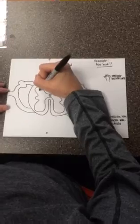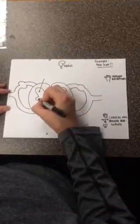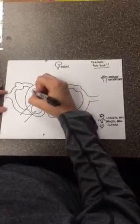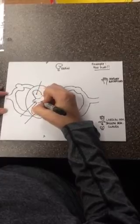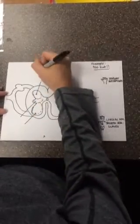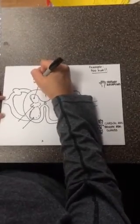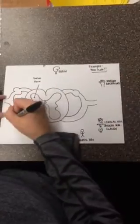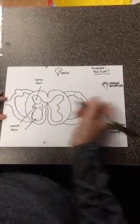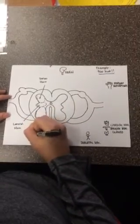My gray matter is broken up into three different areas, which are all called horns. This is my dorsal horn of the gray matter, with dorsal being another name for posterior, the lateral horn, and the ventral or anterior horn.